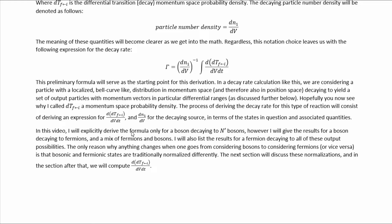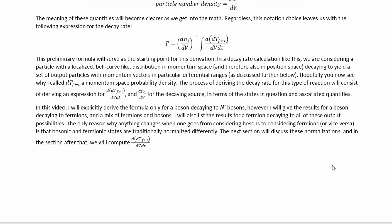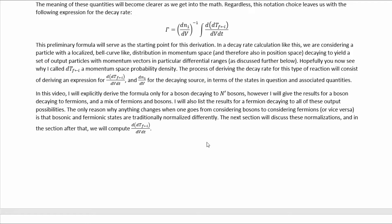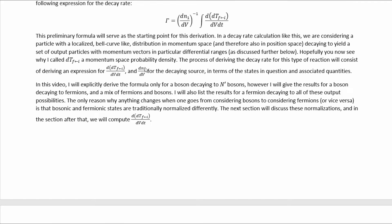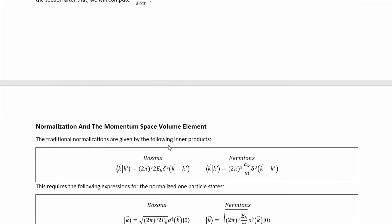In this video, I will explicitly derive the formula only for a boson decaying into n' bosons. However, I will give the results for a boson decaying to fermions and a mix of fermions and bosons, and also list the results for a fermion decaying to all of these output possibilities. The only reason anything changes when going from bosons to fermions is that bosonic and fermionic states are traditionally normalized differently. The next section will discuss these normalizations, then we'll compute the two key quantities and insert them to get the answer.